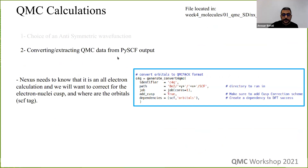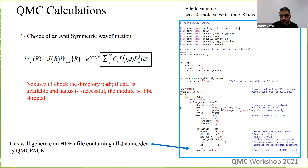Once we do this in the Nexus file we generate the wave function. We're going to analyze all points for the SCAN functional with the triple-zeta basis set — a choice that is large enough but not quadruple-zeta, just decent. At the end of the SCF cycle, with 'save_qmc equals true', the files for QMCpack are generated. The next step is to convert and extract QMC data using another block in Nexus that will convert and add the cusp correction.